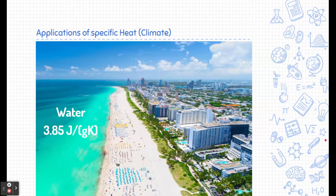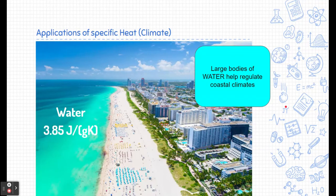Well, water or the ocean itself has a very important role in that, specifically the specific heat of water. Now salt water has a specific heat of 3.85 joules per gram Kelvin. And that means that those large bodies of water help regulate coastal climates. It takes a lot of heat energy to change the temperature of one gram of water by one degree Kelvin or Celsius.